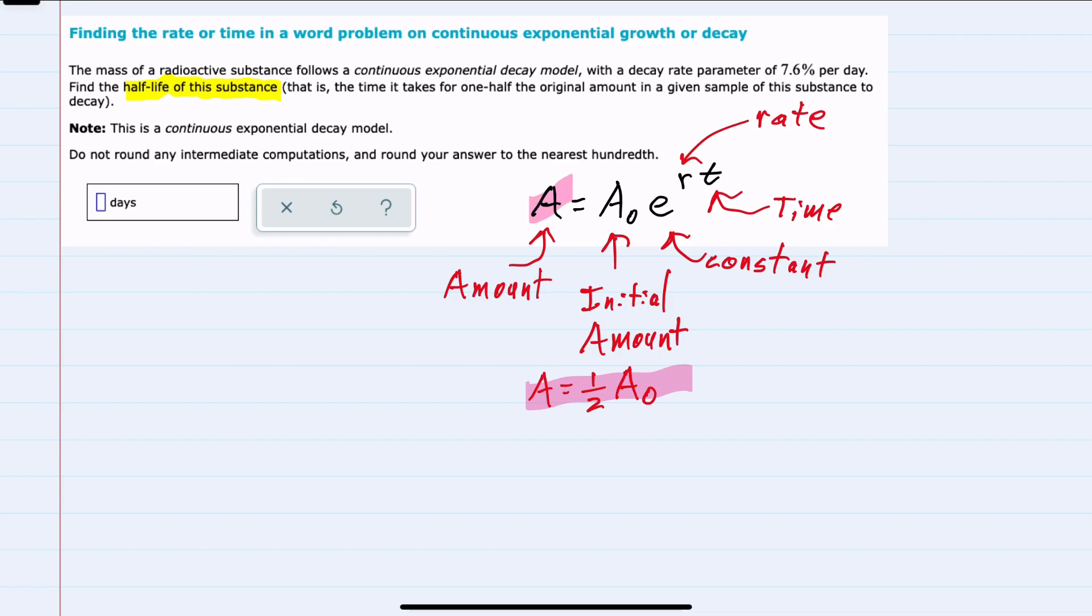So rewriting, we have A which is one half of the initial amount equal to the initial amount times e to the rate which is 0.076. And since it's a decrease this would be a negative rate times t.